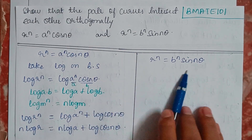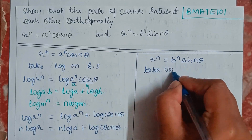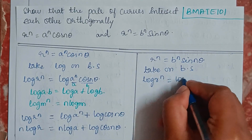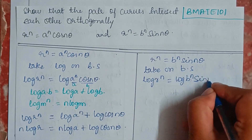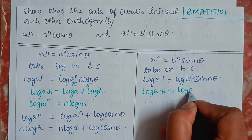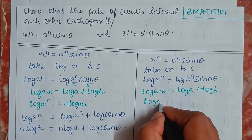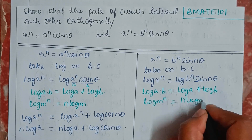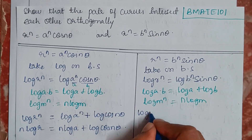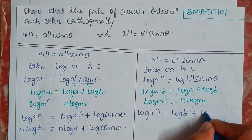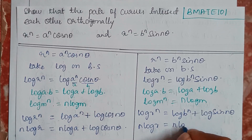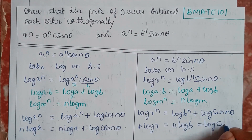I will do the same for the second curve. Taking log on both sides: log(r^n) equals log(b^n · sin(nθ)). Using the same log rules, this expands to n·log r equals n·log b plus log(sin(nθ)).